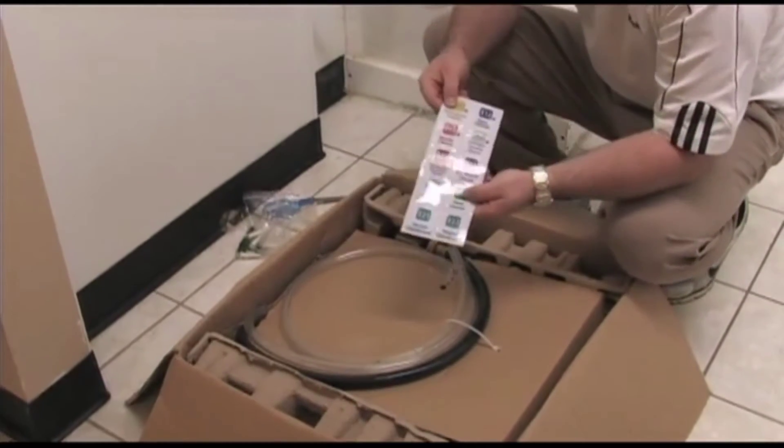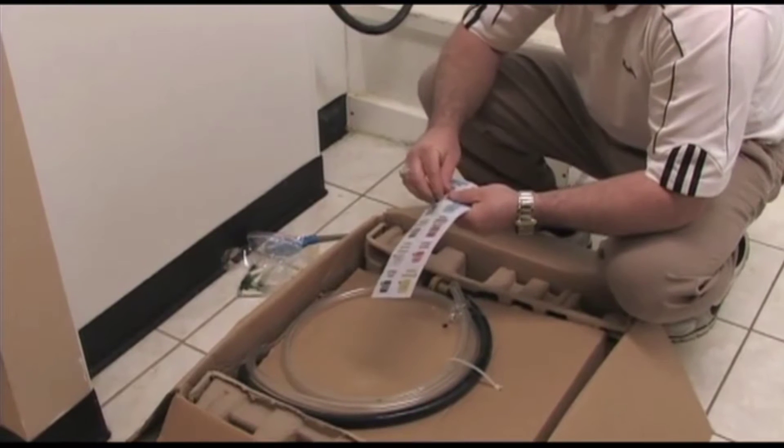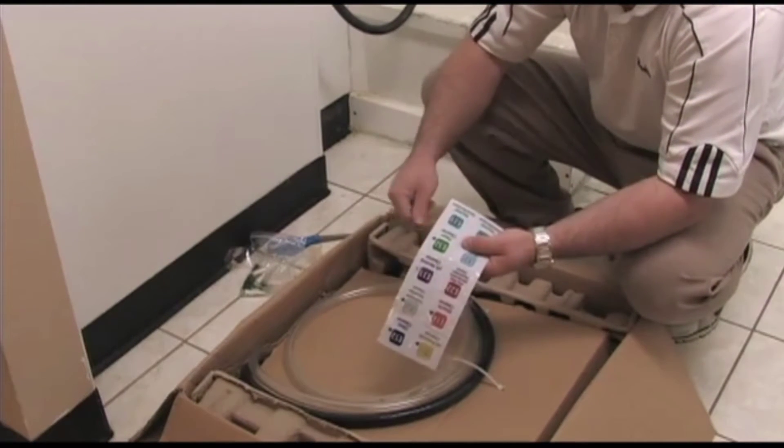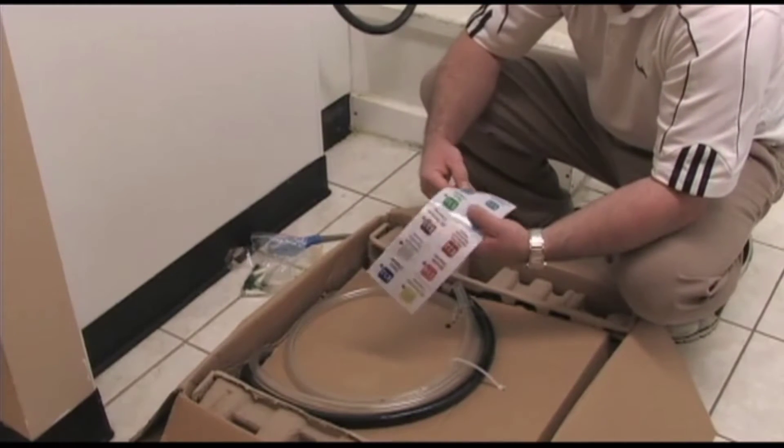The parts bag contains four drywall anchors, four screws, three sets of keys, and a plastic shroud for the vacuum breaker backflow preventer.